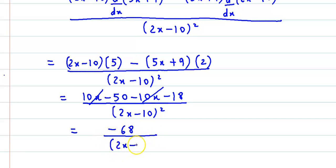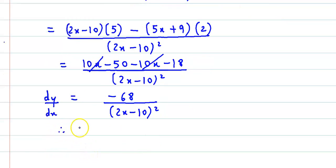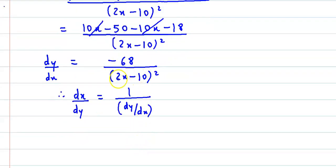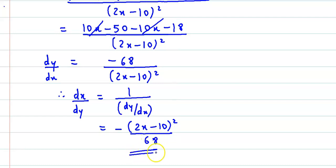So dy by dx is equal to minus 68 divided by (2x minus 10) the whole square. लेकिन हमें पूछी गई value dx by dy है. So therefore dx by dy is reciprocal of dy by dx, that is 1 upon dy by dx where dy by dx is not equal to 0. Reciprocal लेने पर: dx by dy is minus (2x minus 10) the whole square divided by 68. So this is dx by dy.